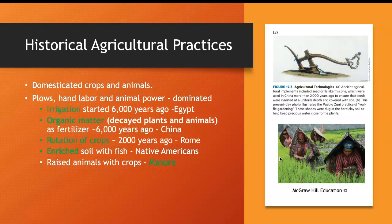We humans domesticated crops and animals and had wisdom in agriculture thousands of years ago. We realized the importance of irrigation — people built channels for irrigation in Egypt. We also knew the importance of organic matter, so we raised crops and animals together so the animals provided nutrients for the crops. Native Americans knew how important soil properties are, so they added organic matter to the soil.